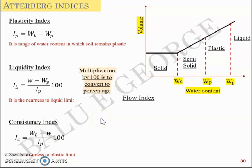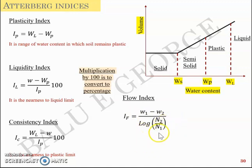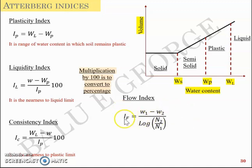The flow index is the slope of the flow curve — the plot between water content and number of blows used when defining the liquid limit using the Casagrande apparatus. Flow index IF = (w1 - w2) / log(n2 / n1), where n1 is the number of blows corresponding to water content w1 and n2 corresponds to water content w2. The slope of this straight-line flow curve is the flow index.